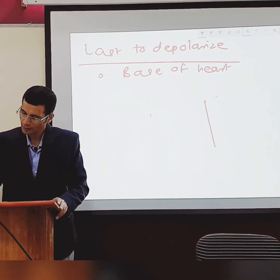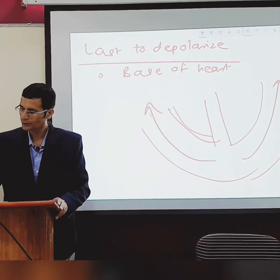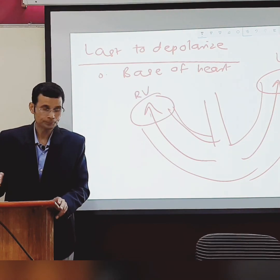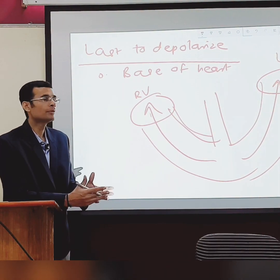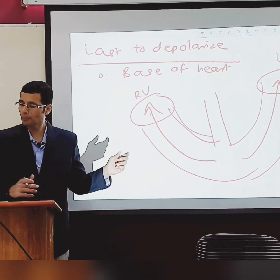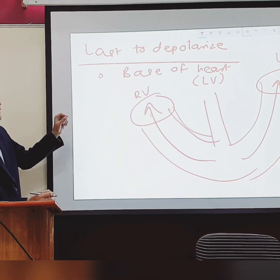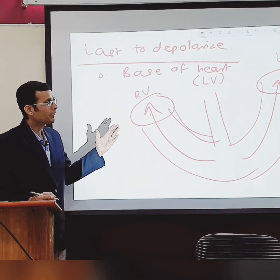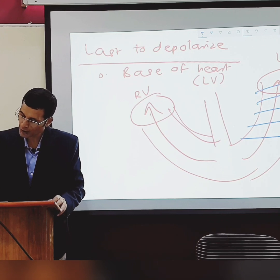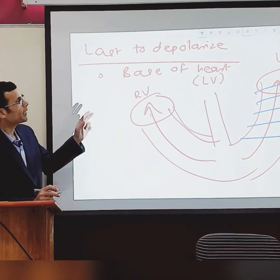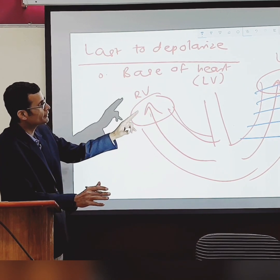Depolarization spreads from apex to base, so the base of the left ventricle and base of the right ventricle are last. The left ventricle takes a little longer to complete excitation because it has a thicker muscle mass. Additionally, depolarization spreads from endocardium to epicardium, so the last to depolarize would be the epicardium of the base of the left ventricle.